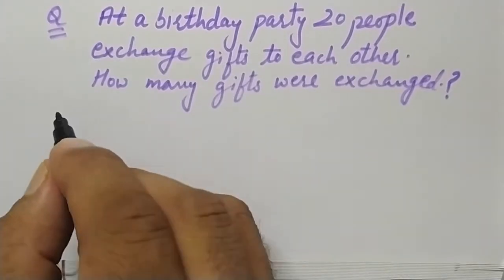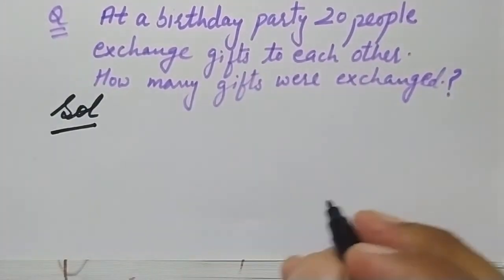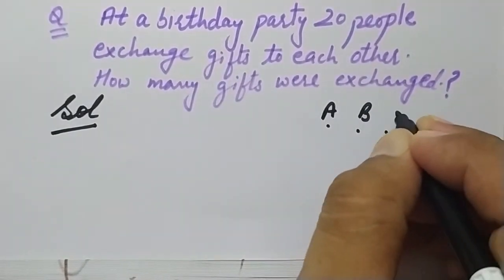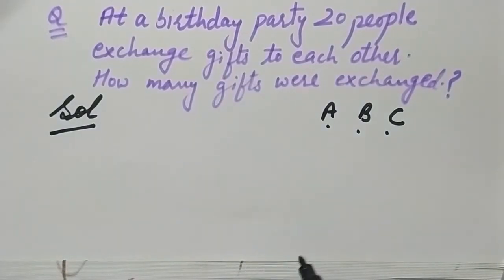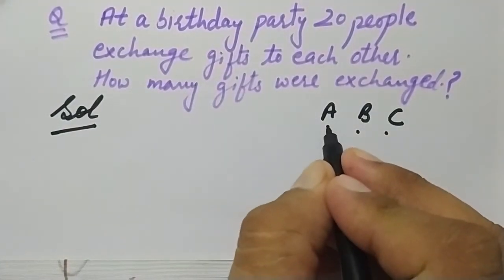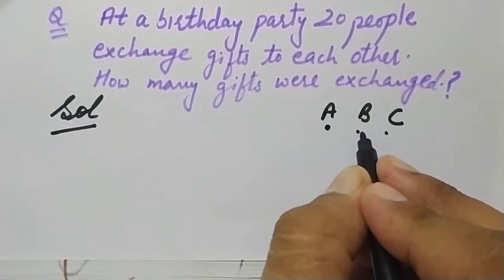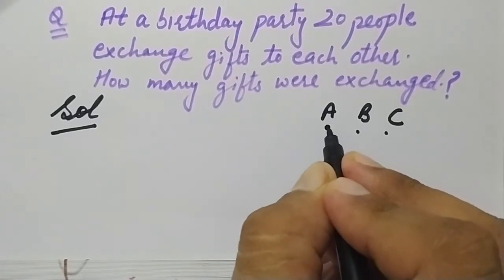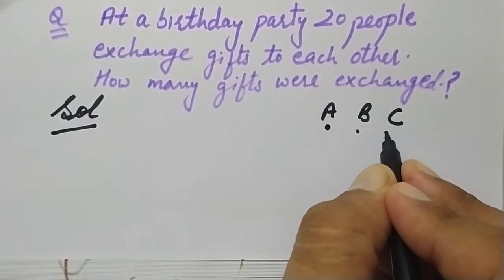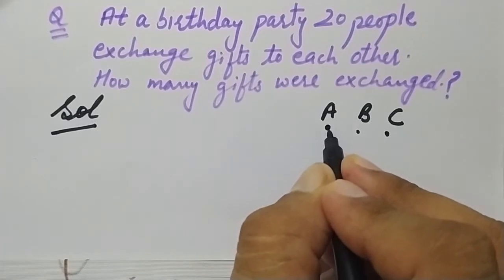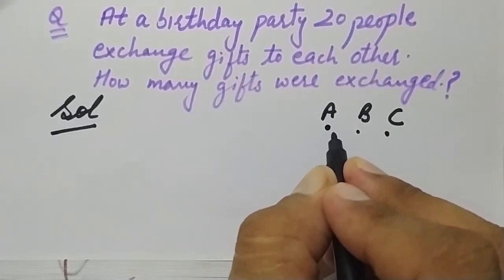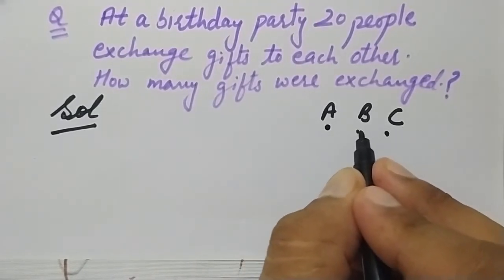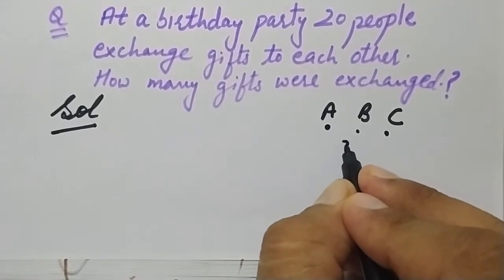Before solving this question, let's take a simple example. Let there be three people in the party, A, B, and C. Then A will give two gifts — one to B and one to C. B will also exchange two gifts — one to A and one to C. C will also exchange two gifts — one to A and one to B. So in a party of three people, six gifts will be exchanged.